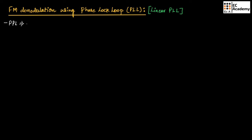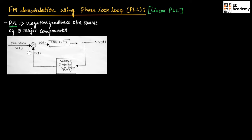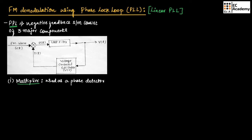The phase lock loop is a negative feedback system that consists of three major components. This is the block diagram of phase lock loop. The first component is a multiplier that is used as a phase detector or phase comparator. It also consists of a voltage controlled oscillator and a loop filter, which is acting as a low-pass filter.